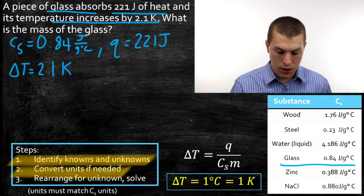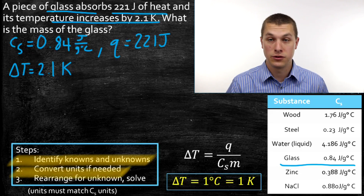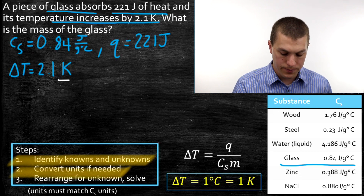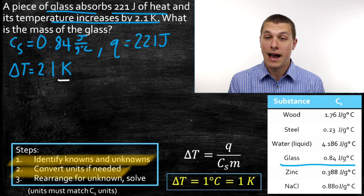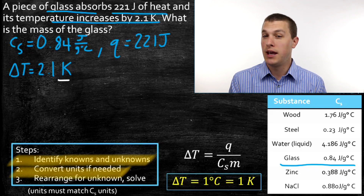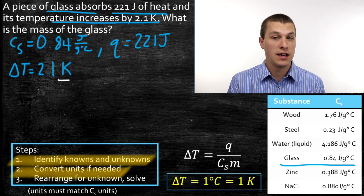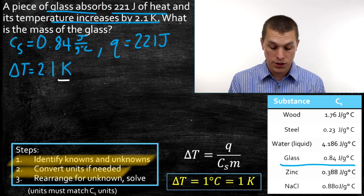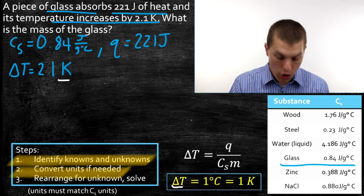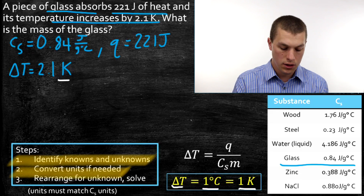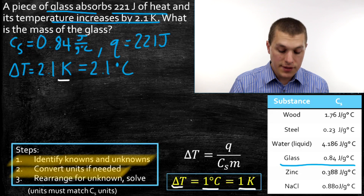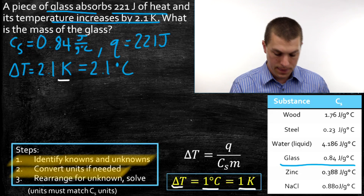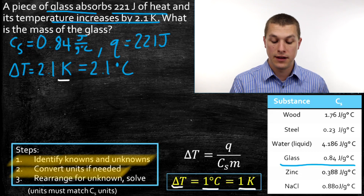Step two is to convert units if needed. Our heat is in joules and our specific heat capacity is fine since we pulled it from the table. However, our change in temperature is in Kelvin. Here's an important point: when dealing with a change in temperature, 1 degree Celsius is exactly equal to 1 Kelvin. So we don't have to add 273, because the degree units of Kelvin and Celsius are the same size. We don't need any real conversion — a change of 2.1 Kelvin is identical to a change of 2.1 degrees Celsius.